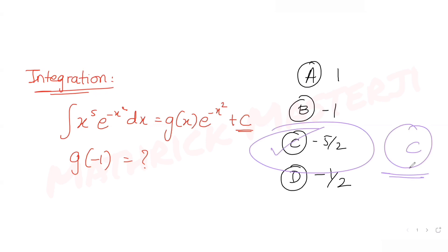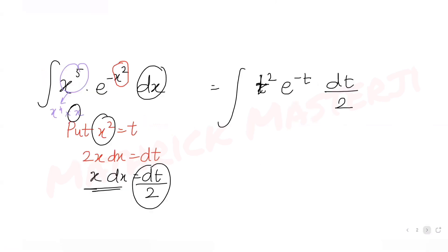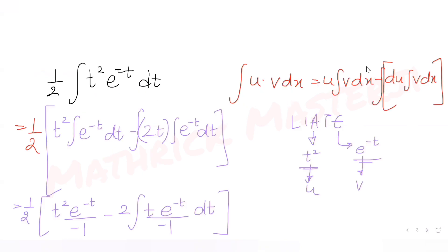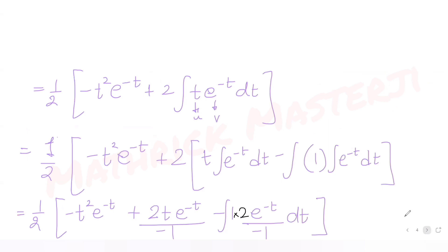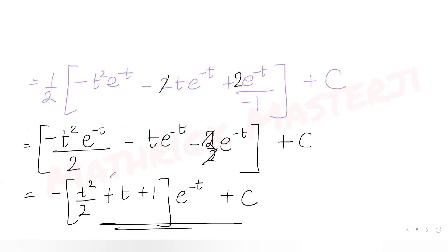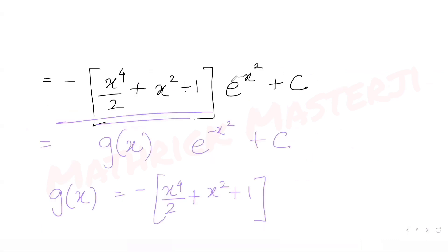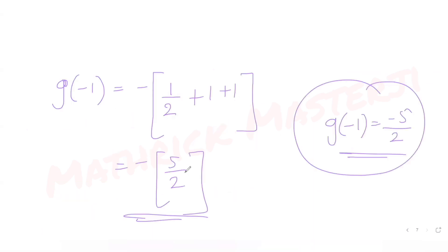To summarize: we substituted x square as t, obtained x dx as dt over 2, and the integral became half the integral of t square times e raised to minus t dt. We applied the product rule twice to get minus (t square over 2 plus t plus 1) times e raised to minus t plus c. Resubstituting t as x square and comparing gave g(x). Substituting x = minus 1 into g(x) gives minus 5 over 2, confirming option C.